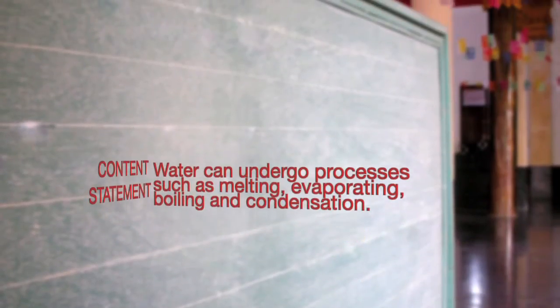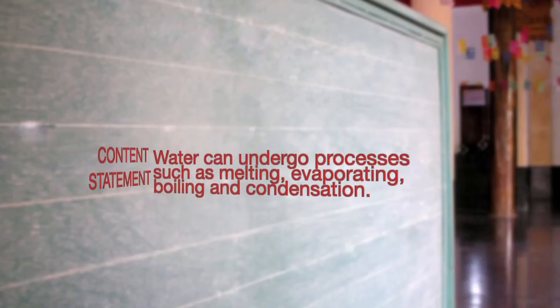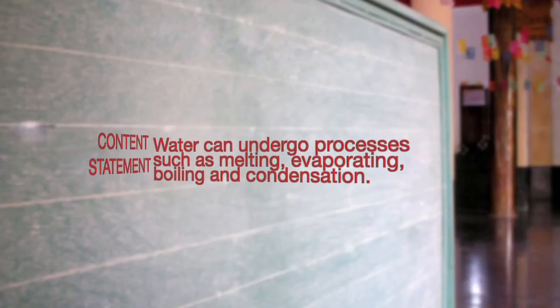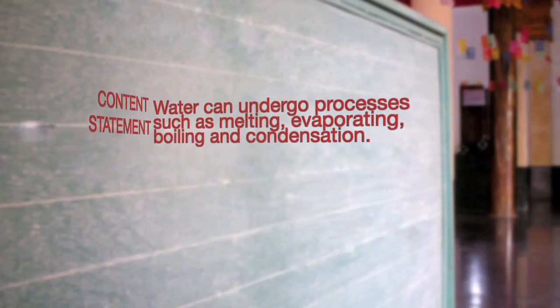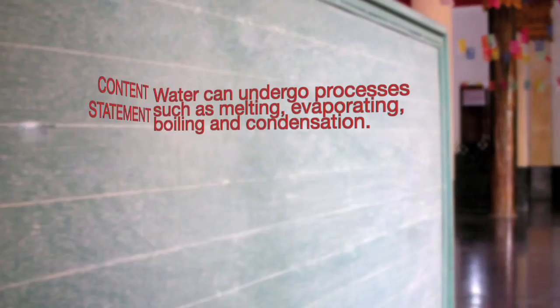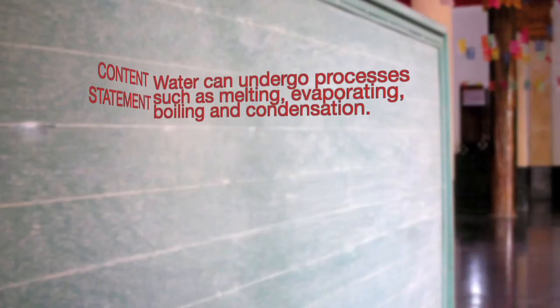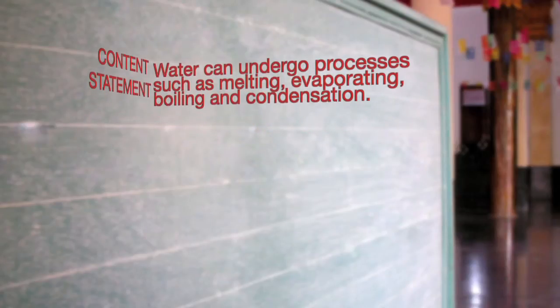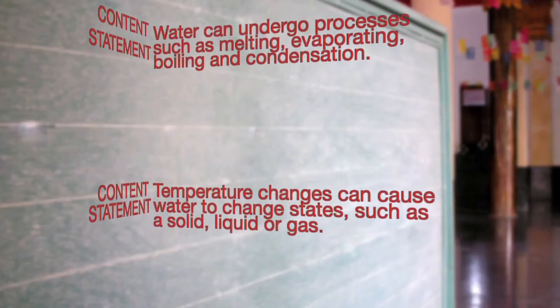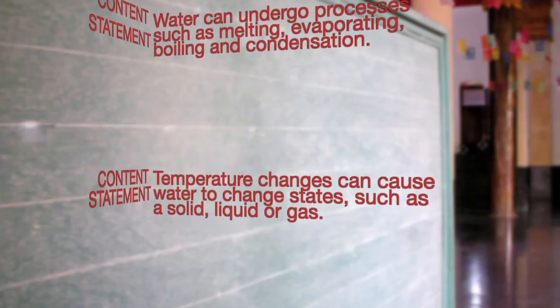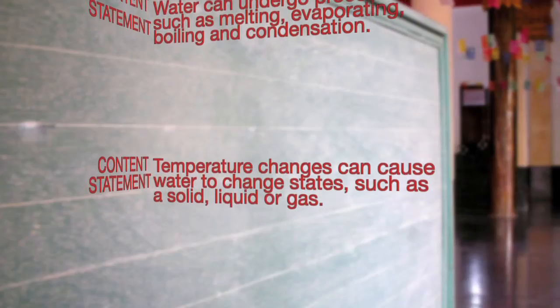Let's take a look at a few content statements. Water can undergo processes such as melting, evaporating, boiling, and condensation. Temperature changes can cause water to change between certain states, such as a solid, liquid, or gas.